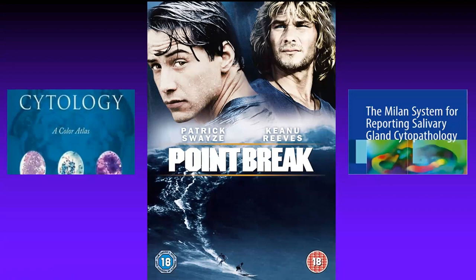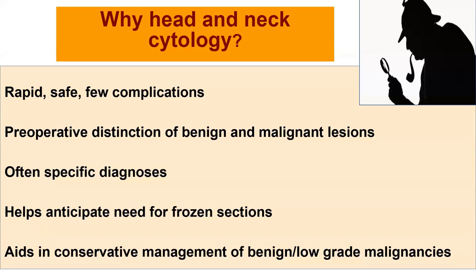Classification systems, not only the Milan system, may represent a turning point compared with classical and usual cytology. But why head and neck cytology? Fine needle aspiration in the salivary gland is a rapid and safe method with few complications. It offers a preoperative distinction in the majority of benign and malignant lesions — around 80% of them — sometimes with a specific diagnosis. It also helps to reduce the need for frozen section, and it represents a valid aid in conservative management for benign and low-grade malignancies, but also for more aggressive or palliative treatment in high-grade lesions or metastasis.